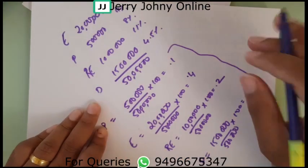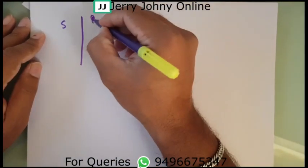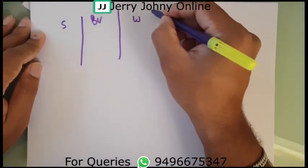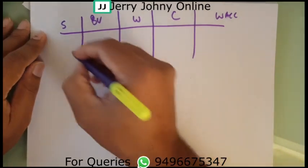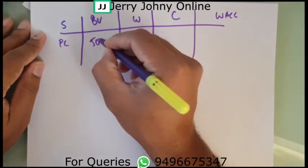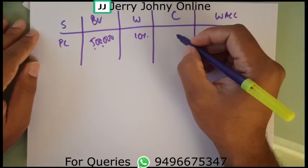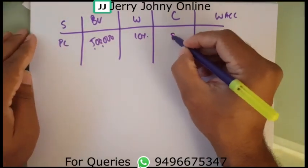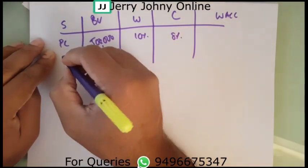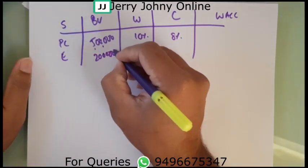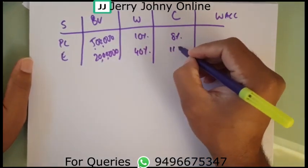Based on these weights, we will find out the cost of capital. We prepare a simple table with columns: sources, book value, weight, cost, and WACC. Preference share: book value 5 lakhs, weight 10 percent, cost 8 percent. Equity share: book value 20 lakhs, weight 40 percent, cost of capital 11 percent.